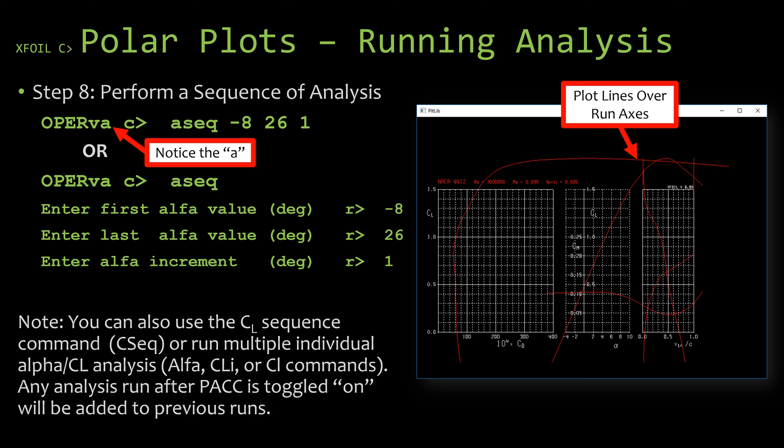At this point we need to tell XFOIL the angle of attack or angles of attack or the coefficient of lift or coefficients of lift that we want the analysis run at. We can use either individual commands where we do a single angle of attack or a single coefficient of lift, or we can use the sequence command to automate this process which would run a number of different angles of attack or a number of different coefficients of lift. Now some people like to do it individually because then you can watch it as it iterates through and see how it converges, how many iterations it took to converge.